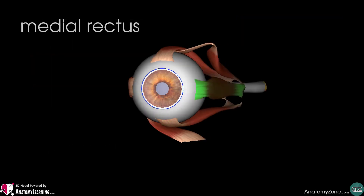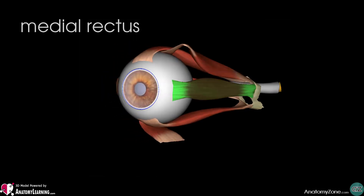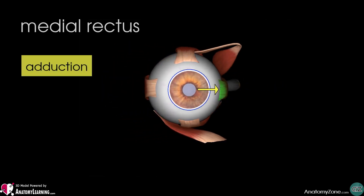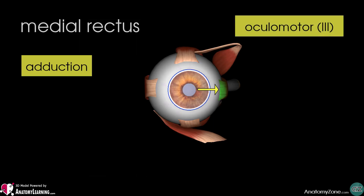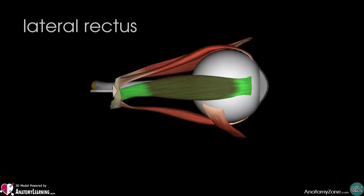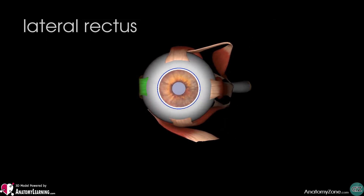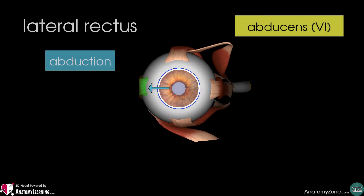The medial rectus muscle originates from the anterior part of the common tendinous ring and inserts onto the anterior aspect of the sclera. It acts to adduct the eyeball, and is innervated by the oculomotor nerve, cranial nerve number 3. The lateral rectus muscle originates from the lateral part of the common tendinous ring and attaches to the anterolateral aspect of the sclera. As you may guess by the insertion point of this muscle, it acts to abduct the eyeball. This muscle is innervated by the abducens nerve, cranial nerve 6. You can see now why the abducens nerve gets its name — it is responsible for the abduction of the eyeball via innervation of the lateral rectus muscle.